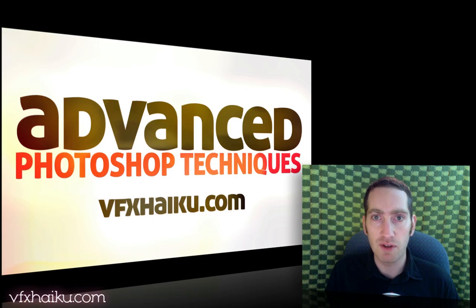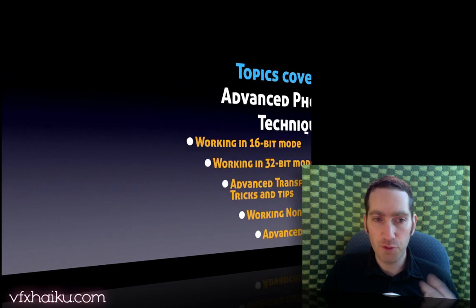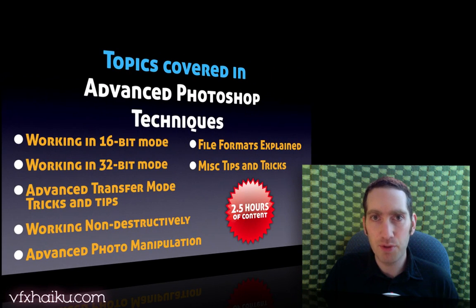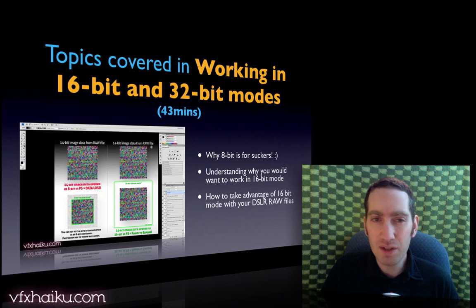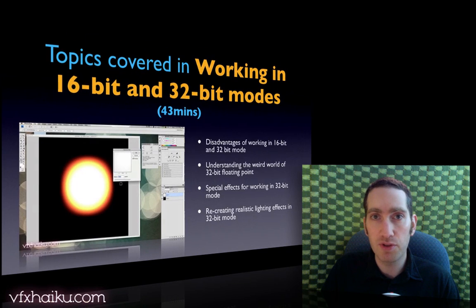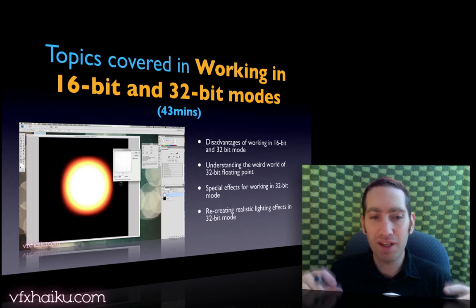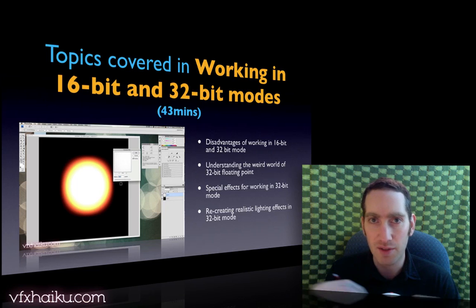We're going to take a look at a whole bunch of stuff. I've got a little slideshow, let's go through it. The first two things I cover are working in 16-bit and 32-bit floating-point modes. Not a lot of people dive into this, but there are really good benefits to working in 16-bit mode. Anyone working with a standard compositing application like Fusion, Nuke, or Shake — they all work in 32-bit mode. When you really want to enhance your work and work in a way that light behaves, 32-bit mode is the way to go. We'll cover the pros and cons of working in 32-bits in Photoshop.